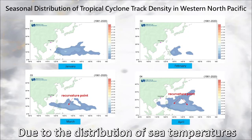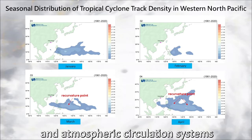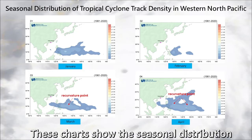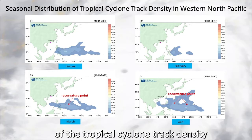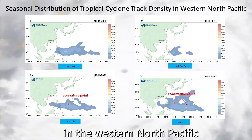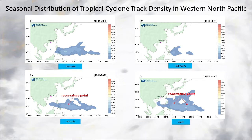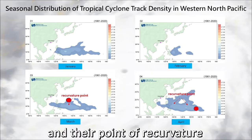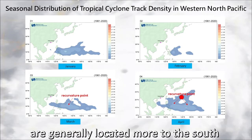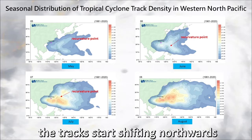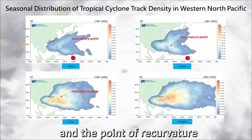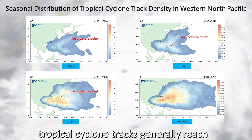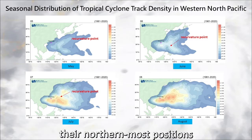Due to the distribution of sea temperatures and atmospheric circulation systems, there are seasonal variations in tropical cyclone tracks. These charts show the seasonal distribution of the tropical cyclone track density in the western North Pacific. From winter to spring, both the tropical cyclone tracks and their points of recurvature are generally located more to the south. As summer begins, the tracks start shifting northwards, and the point of recurvature will also be more to the north. In mid-summer, tropical cyclone tracks generally reach their northernmost positions.